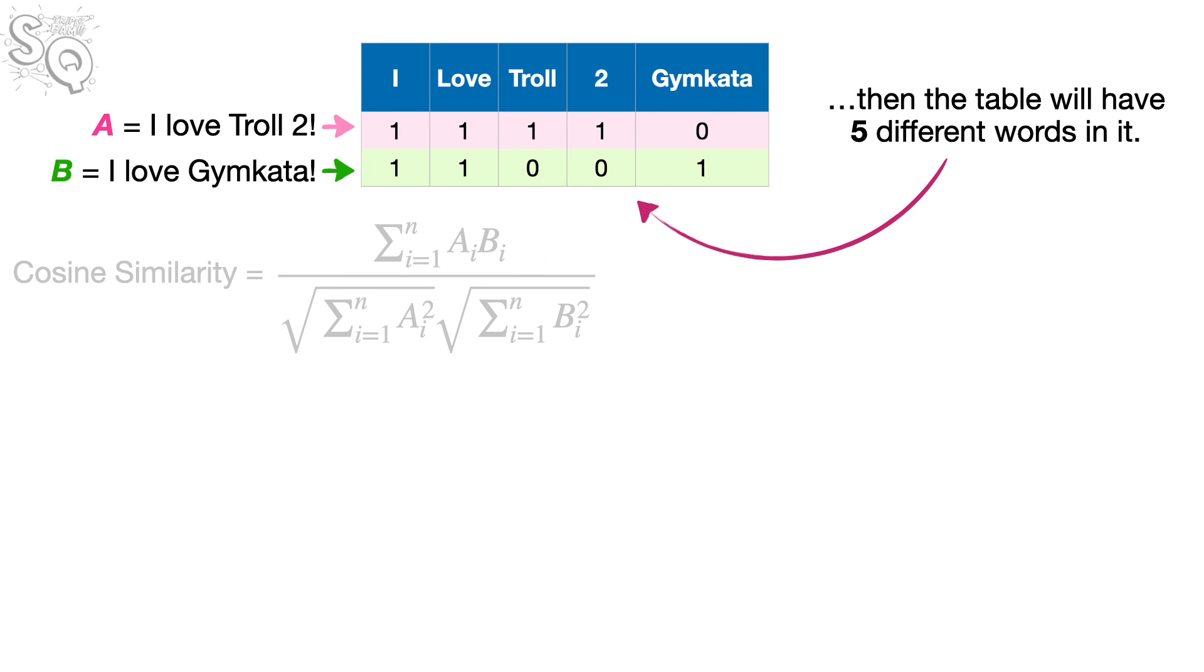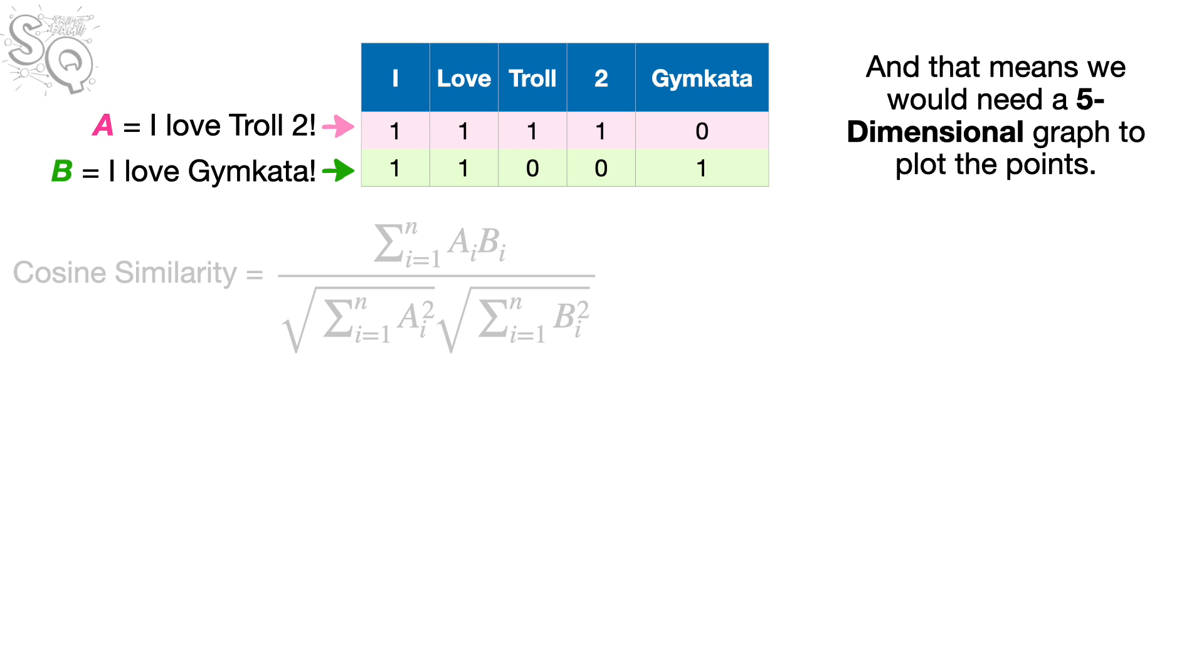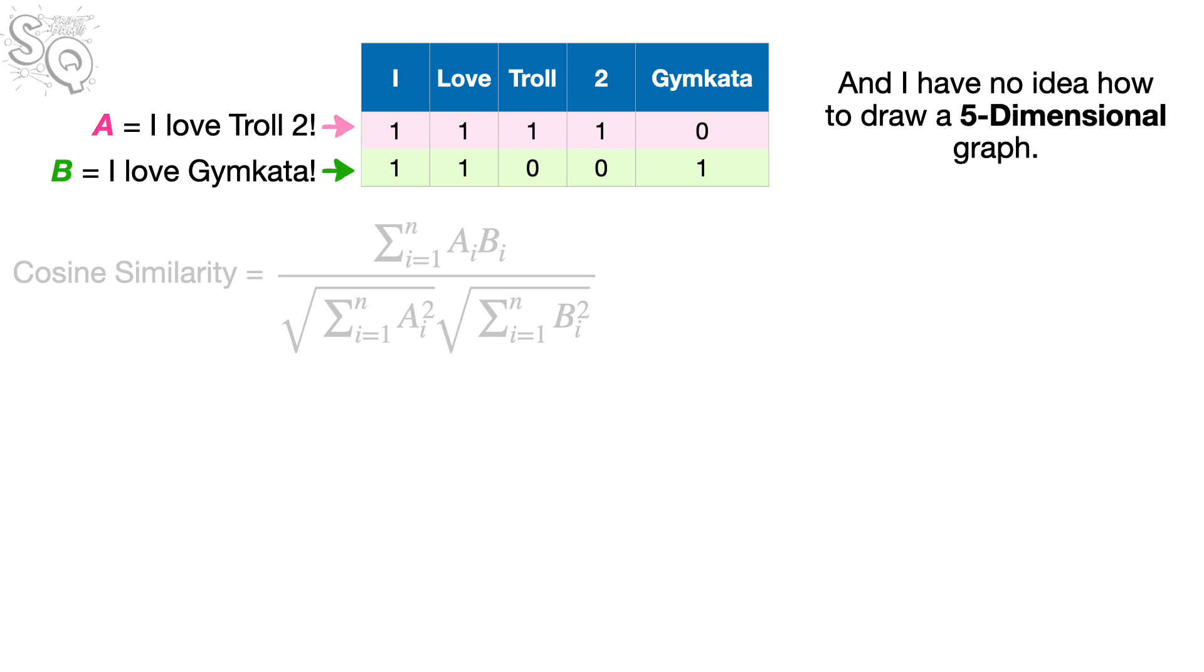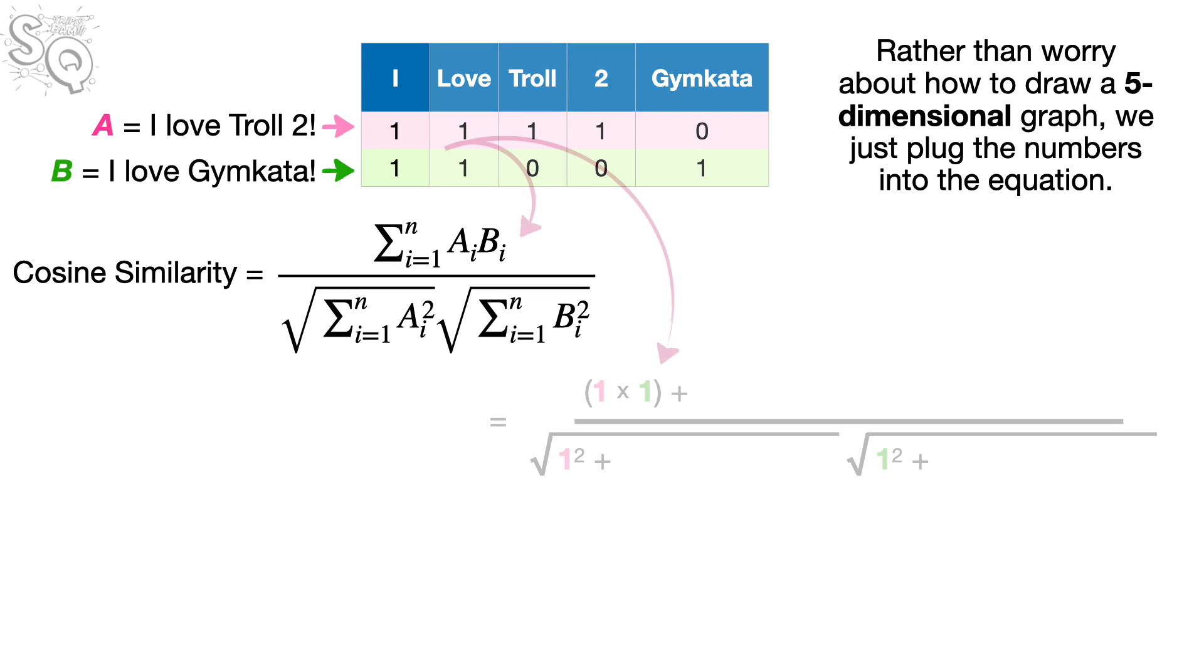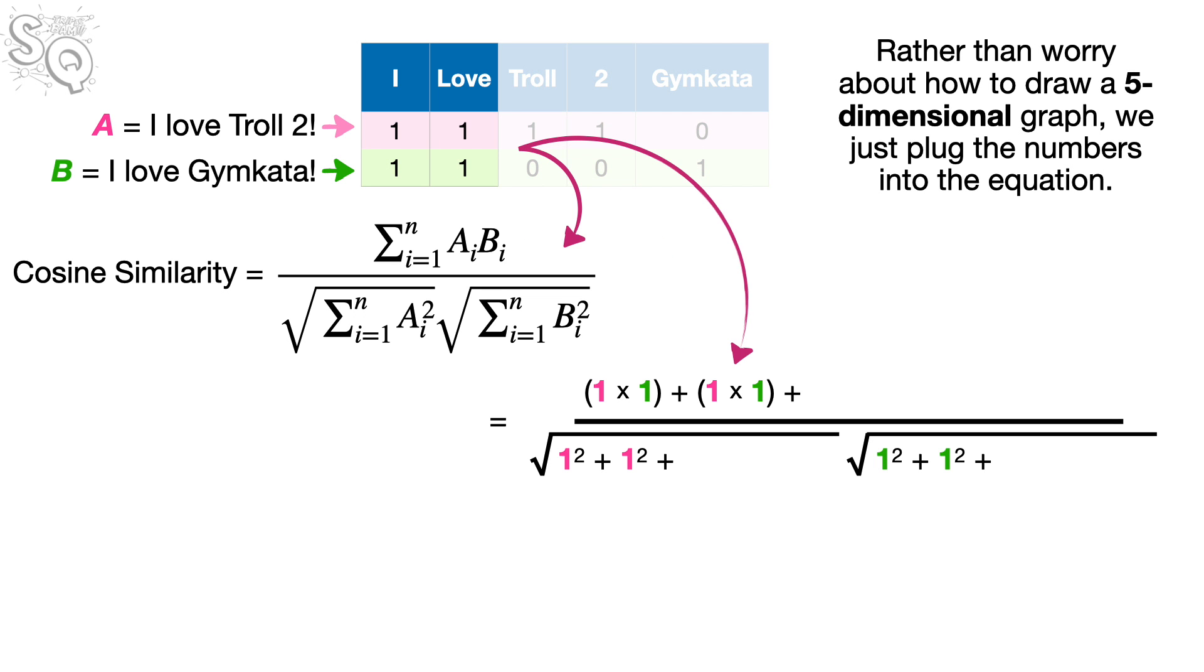then the table will have five different words in it, and that means we would need a five-dimensional graph to plot the points. And I have no idea how to draw a five-dimensional graph. Wah-wah. The good news is that this is another way that having the equation for the cosine similarity can come in handy.